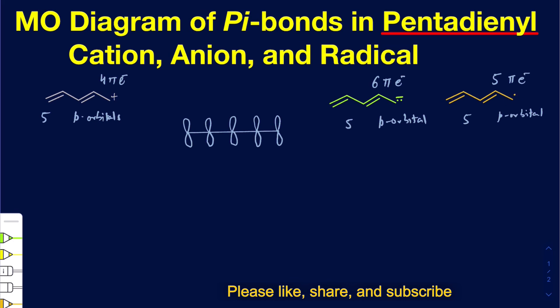Now let's start out with having these five p orbitals arranged in this way. The bottom line is, if I have five atomic orbitals that are unhybridized p orbitals, I should be getting five molecular orbitals. Out of those five, you're going to have some being bonding molecular orbitals, some being anti-bonding, and some being non-bonding.